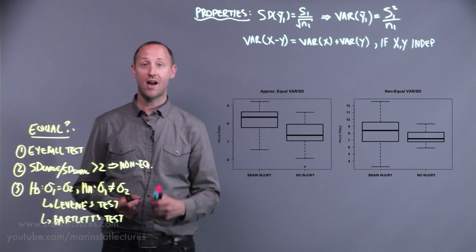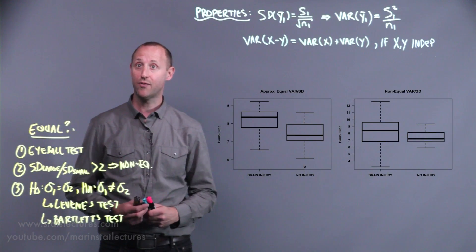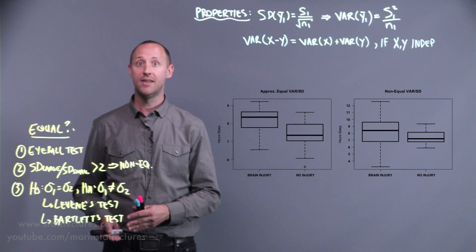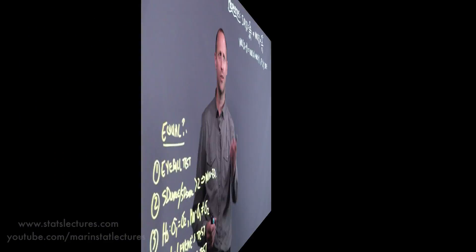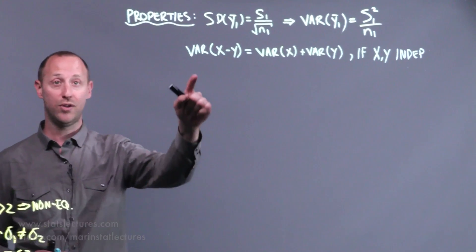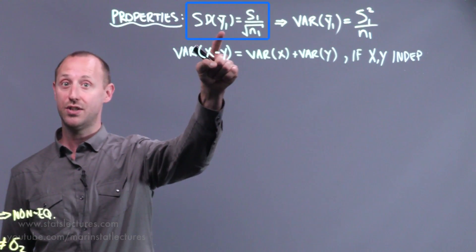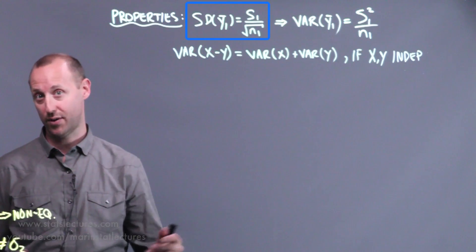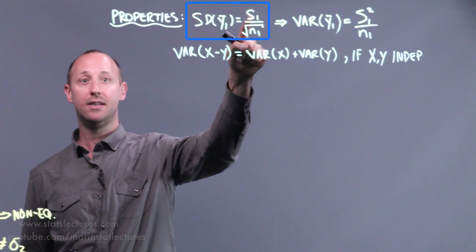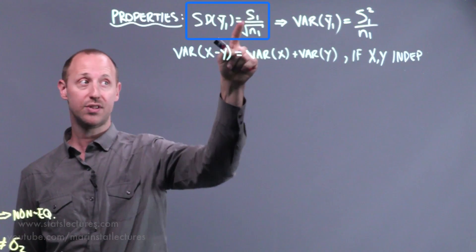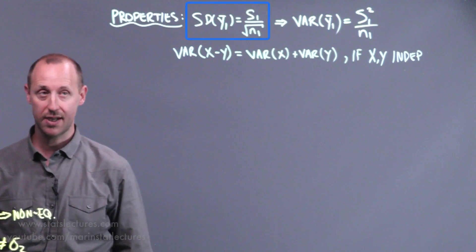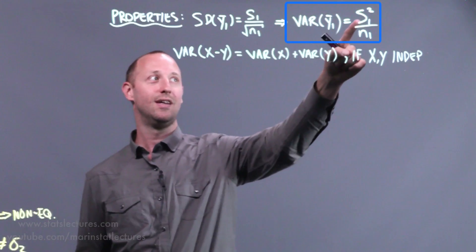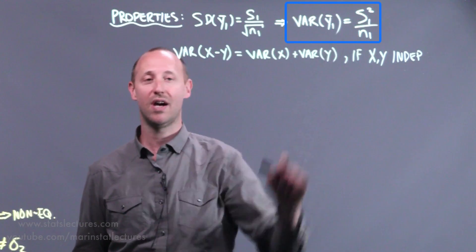Now let's derive the standard error for the difference in means — first assuming non-equal variances, then assuming equal variances. We know that the standard error for the mean is the standard deviation of the individuals divided by the square root of the sample size, or equivalently the variance for the mean is the variance of the individuals divided by the sample size.